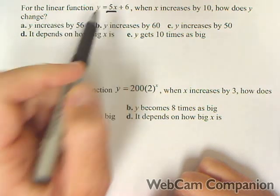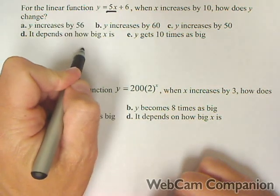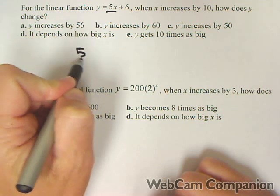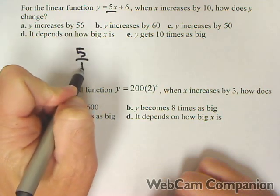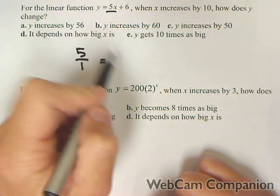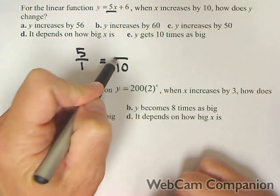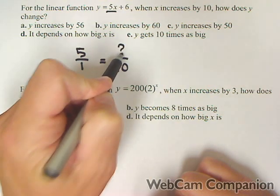Well, notice that the slope is five. That means the y value goes up by five every time x goes up one. So if x goes up 10, the question is, what does y go up?